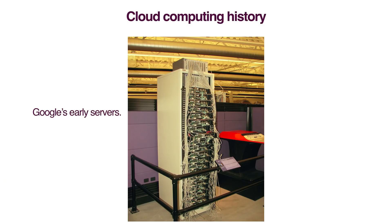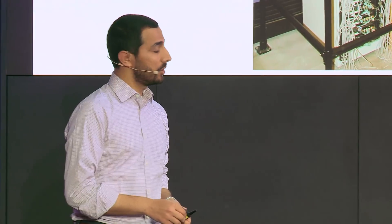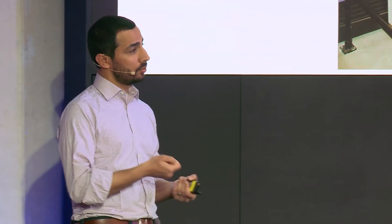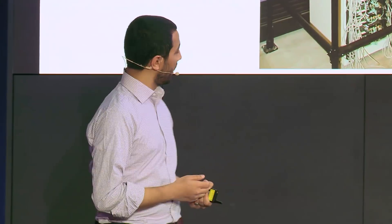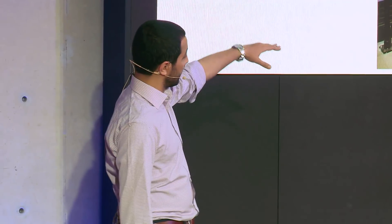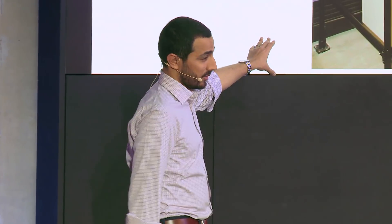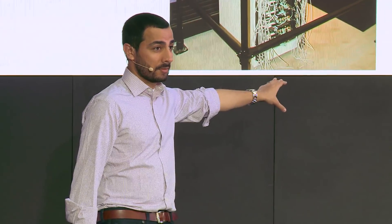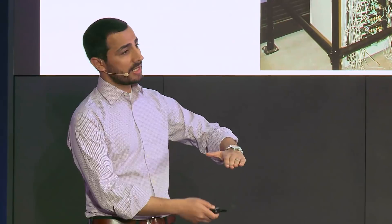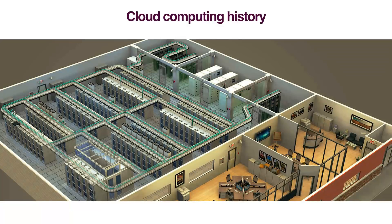Looking at the history of cloud computing, it really started with Google. Back then we used to have supercomputers, and what Google said was that instead of building supercomputers for their search requirements, they were going to take average motherboards and just start racking them up. They started building servers like this — this is actually one of the first original Google servers at the Computer History Museum. So what they were doing is taking commodity hardware and just racking them up, and that evolved into these huge factories of computers called data centers.